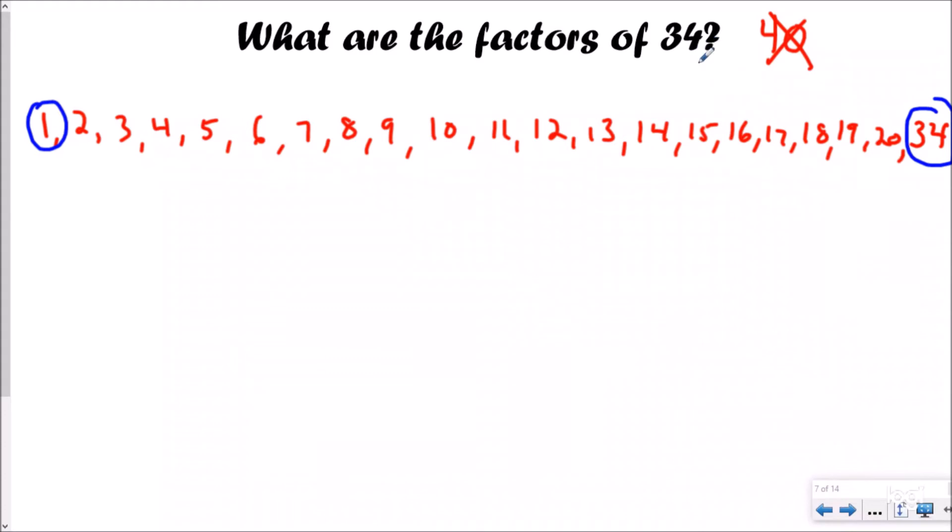My first one's really easy. I always know that 1 times the number itself is going to be a factor. Now this is an even number 34, so I know that 2 is going to work. So I need to figure out what times 2 equals 34. I'm going to start with an easy one. I know 2 times 10 would be 20. If I'm not sure my basic facts, I can skip count from here. 2 times 10 is 20, 2 times 11 would be 22, 2 times 12 would be 24, 2 times 13 would be 26, 2 times 14 would be 28, 2 times 15 would be 30, 2 times 16 would be 32, 2 times 17 would be 34. So 2 and 17 are a factor pair.